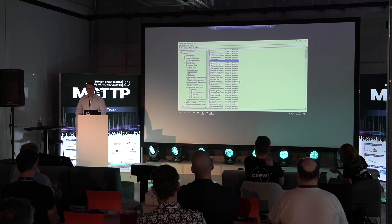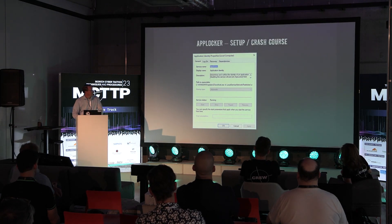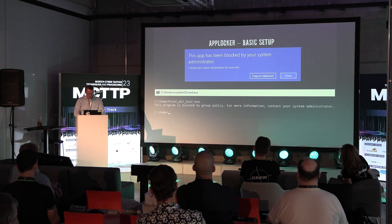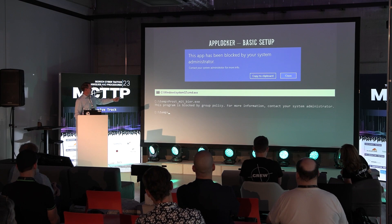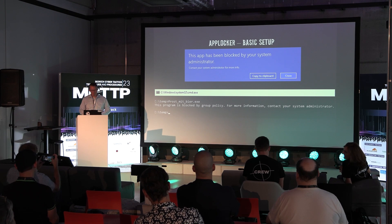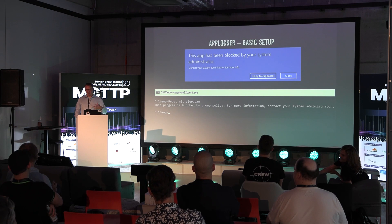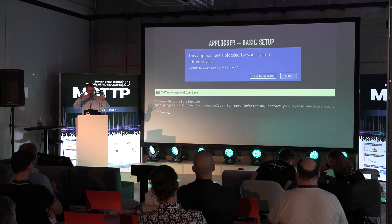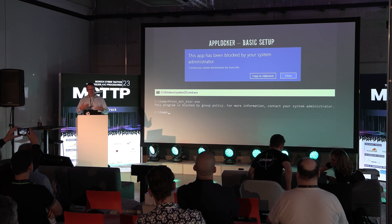When done, running things outside of those allowed folders gets blocked. Here I'm running autoruns from SysInternals from C:\temp - it doesn't work. You get a message that AppLocker is blocking you. If you double-click, you get a blue message. If you run it from the terminal, it says 'this program is blocked by group policy,' meaning AppLocker.